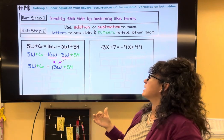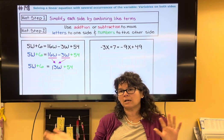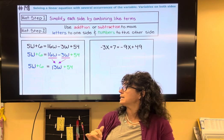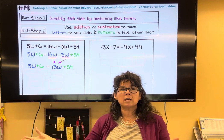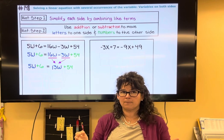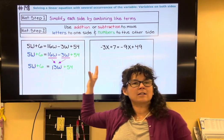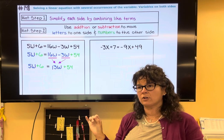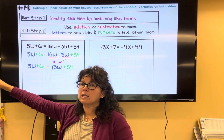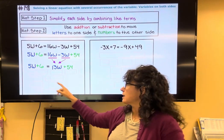Now that we've completed step one, we move on to step two: use addition and subtraction to put letters on one side and numbers on the other. Think of it as putting the blue ones on one side and the green ones on the other. I'm going to move the letters to the left and the numbers to the right.